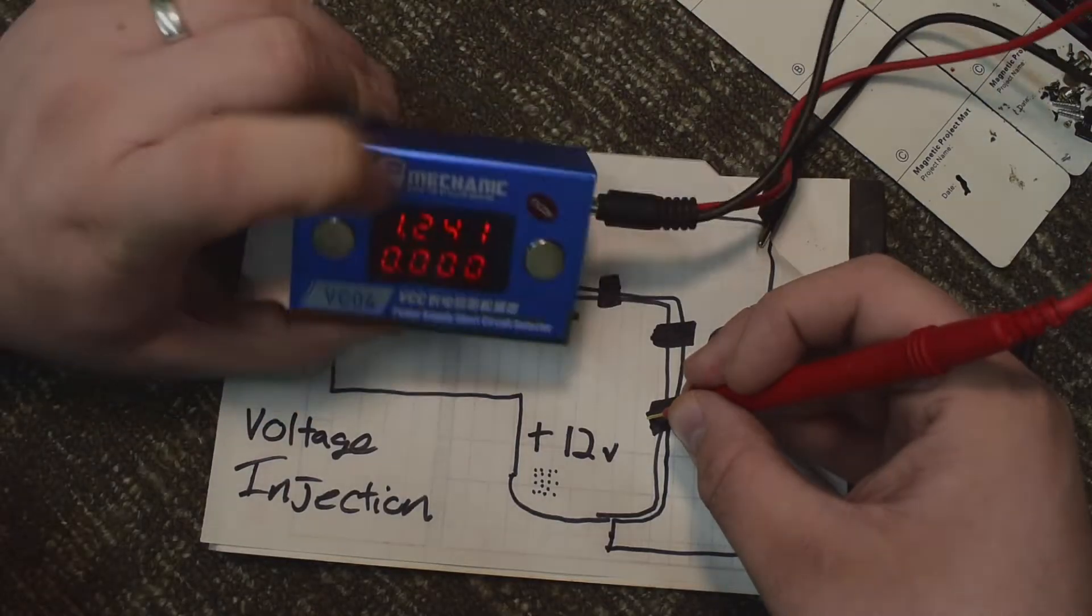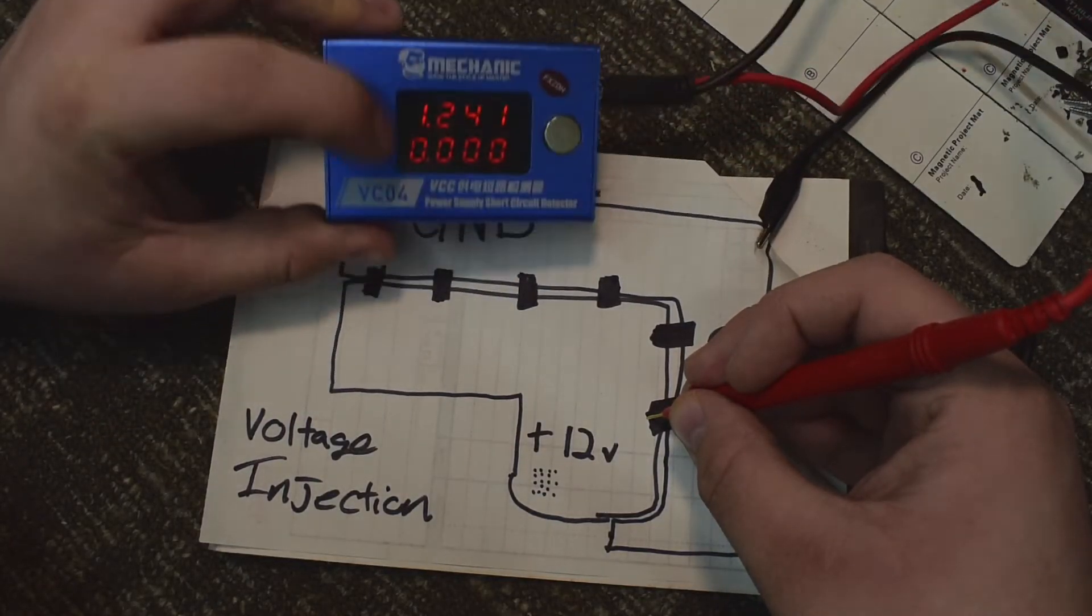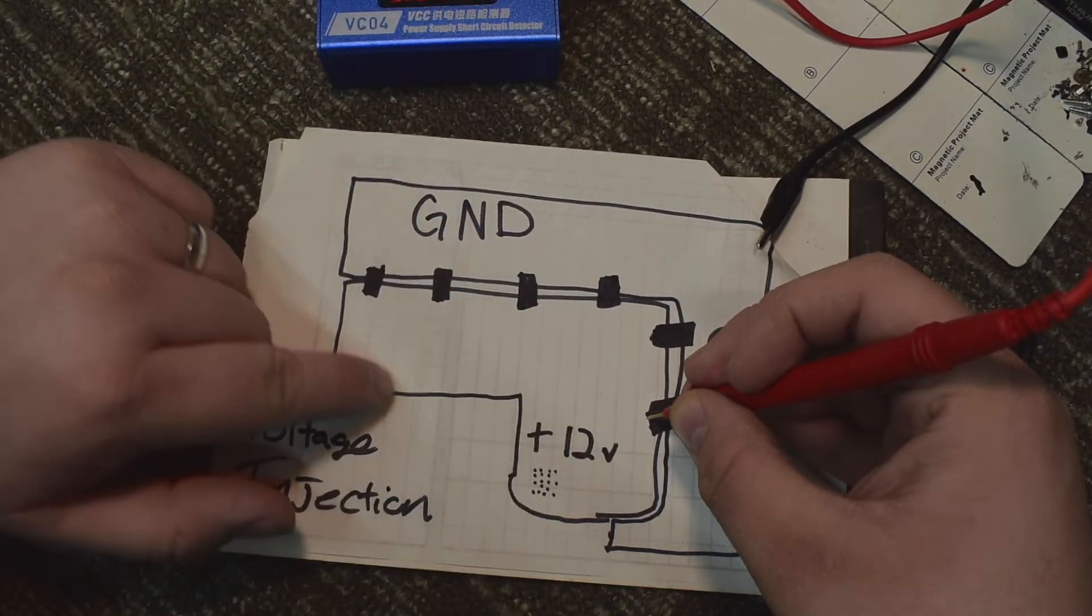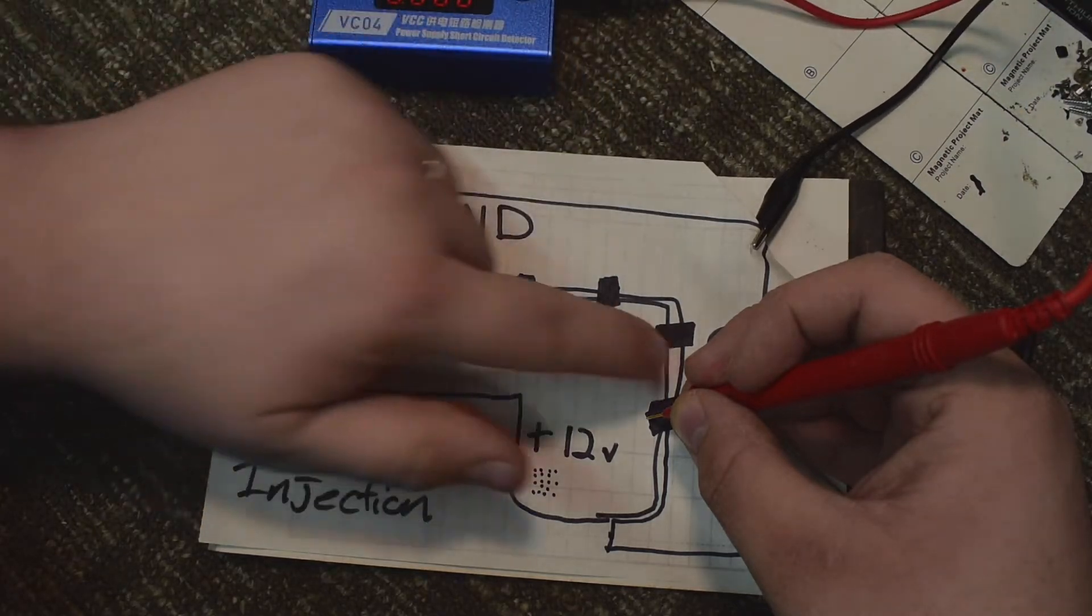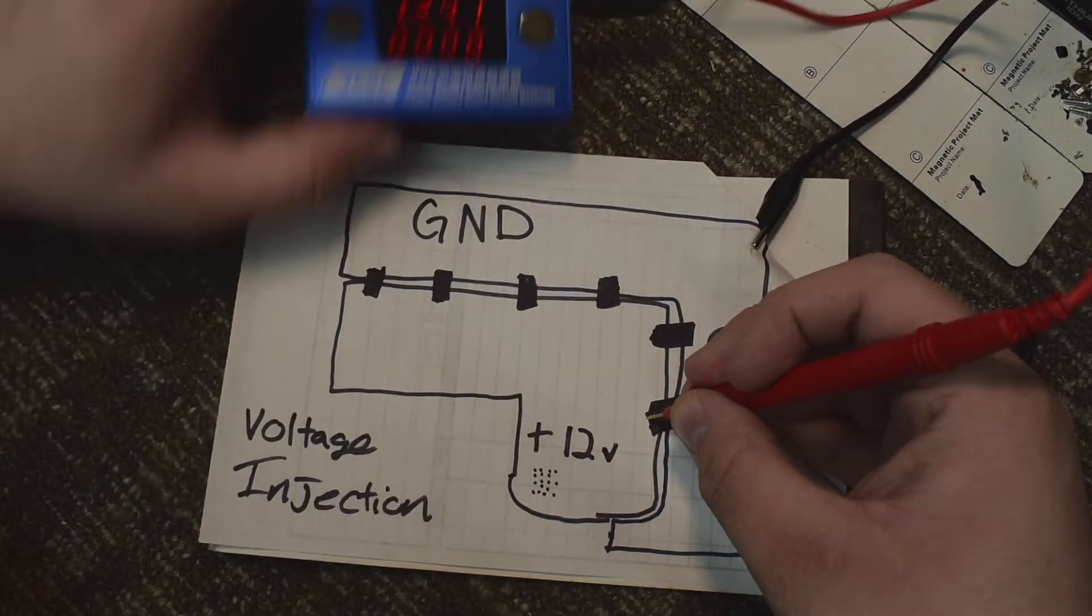And if there is an amp draw here, that is a good sign because we found that there is a shorted component somewhere on this 12 volt rail, and there's amp draw. That means whichever shorted component is drawing amps.